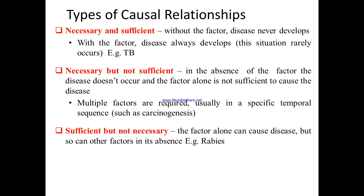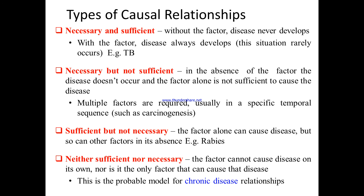Sufficient but not necessary — the factor alone can cause disease, but so can other factors in its absence, like the rabies virus. The microorganism or virus is sufficient to cause death or disease without any other factor. The other type is neither sufficient nor necessary — the factor cannot cause disease on its own, nor is it the only factor that can cause disease. This is probably a model for chronic disease.